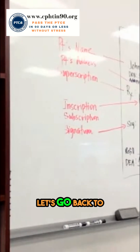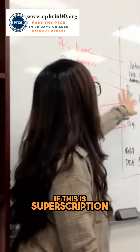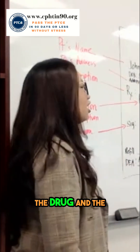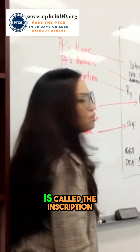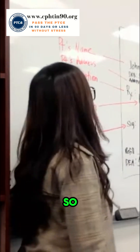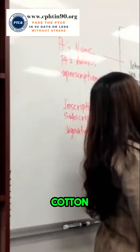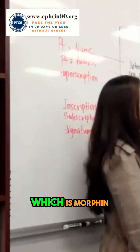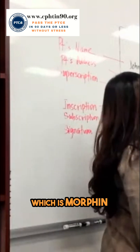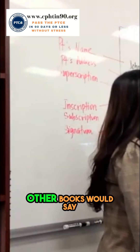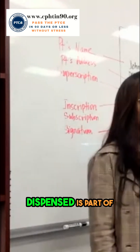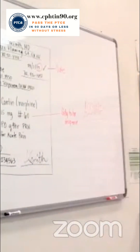Let's go back to the prescription. So if this is a prescription, the drug and the strength of the drug is called the inscription. In this case, it's MS Contin, which is morphine, 15 milligram. Other books would say the quantity to be dispensed is also part of the inscription.